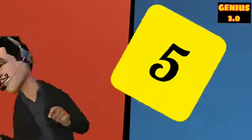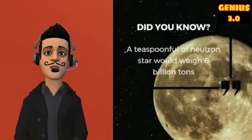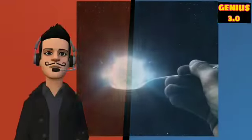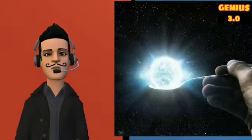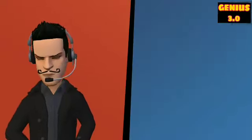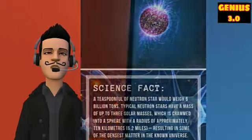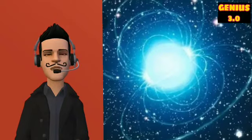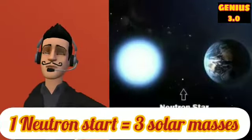The fifth interesting science fact is a teaspoonful of neutron star would weigh six billion tons. A neutron star is the remnants of a massive star that has run out of fuel. The dying star explodes in a supernova while its core collapses in on itself due to gravity, forming a super dense neutron star. A typical neutron star has a mass of up to three solar masses.